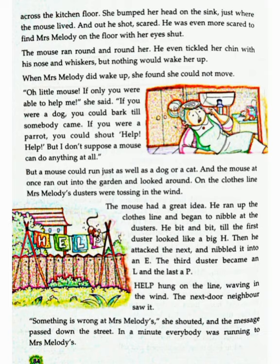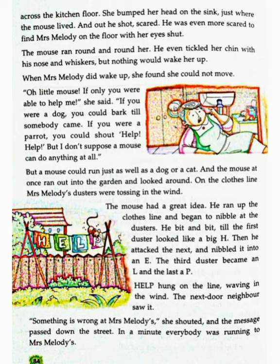When Mrs. Melody did wake up, she found she could not move. Jab Mrs. Melody jaagi to unhon ne paaya ki vah hil nahi sakti. Oh little mouse, if only you were able to help me, she said. Oh chote chuhe, agar kewal tum hi meri madad karne mein saksham hote. If you were a dog you could bark till someone came. Agar tum kutte hote to tum bhonk sakte thay jab tak ki koi nahi aajata. If you were a parrot you could shout help help. Agar tum ek tote hote to tum chilla sakte thay help help. But I do not suppose a mouse can do anything at all. Prantu mujhe nahi lagta ki ek chuha kuch bhi kar sakta hai.